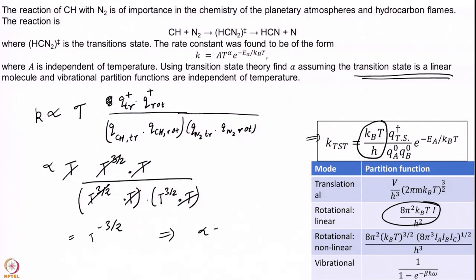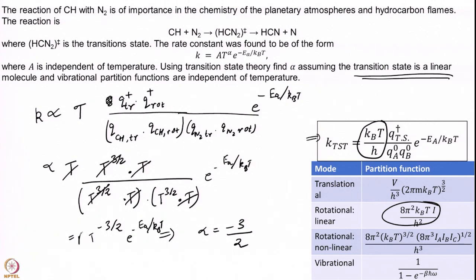This implies alpha equals minus 3/2. Remember I still have that exponential factor that I have simply chosen not to write so far, and all other common factors like mass and 2 pi. So if I compare this formula with the experimental one, you can easily see that alpha is minus 3/2.